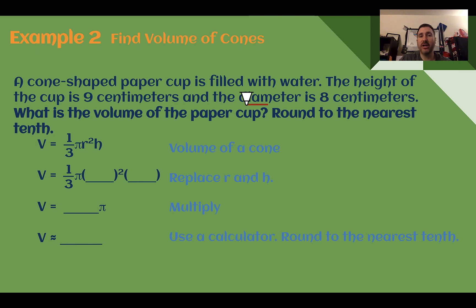Plugging in my values, I need the radius, but I'm given the diameter. So if the diameter is 8, the radius is 4. And then my height was 9. So r of 4, height of 9. Multiplying this out, 4 squared is 16. If I just do 9 divided by 3, that's 3. 16 times 3 is 48.